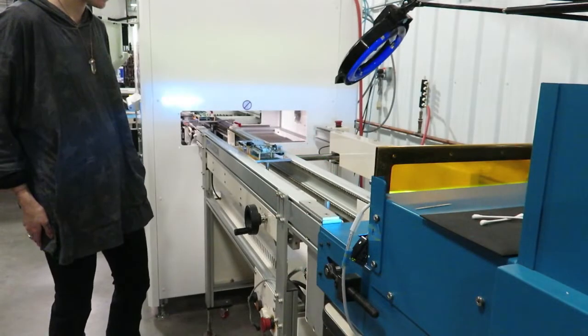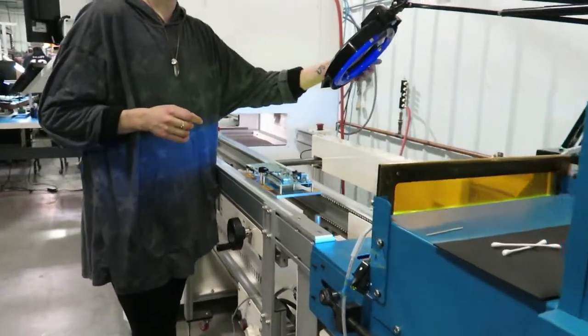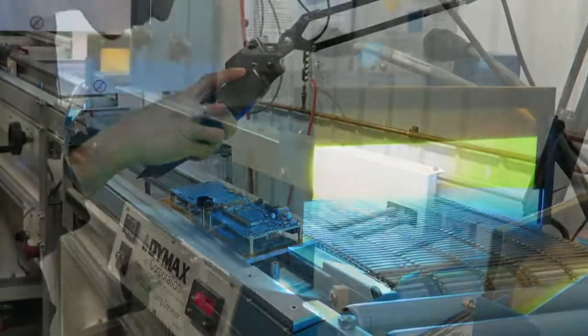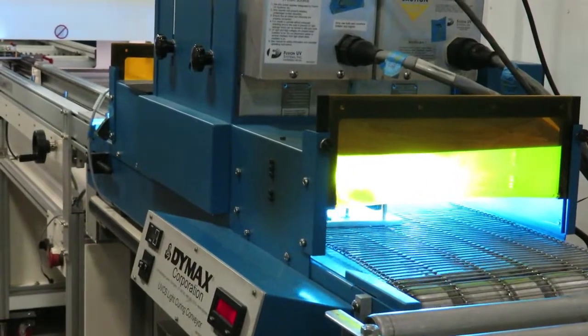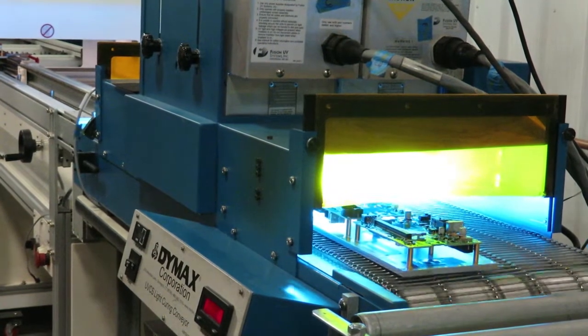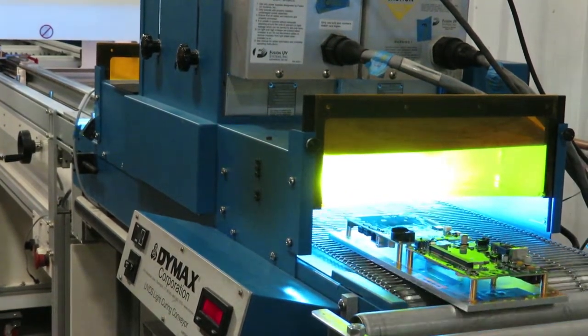At Z-axis we primarily use solventless urethane rather than acrylic for conformal coating. Urethane is more expensive than acrylic but has several advantages. One, it is cured by controlled exposure to intense UV light and does not shrink while curing, so you don't get the thin spots and gaps that you can get with acrylic.